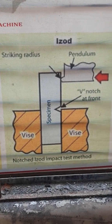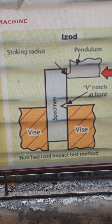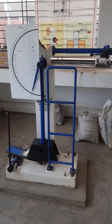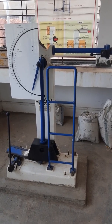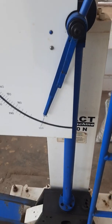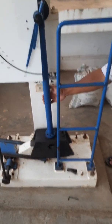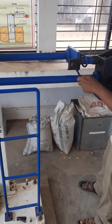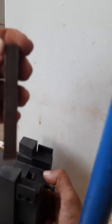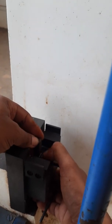This schematic diagram shows the specimen mounting for the ISO test. The specimen is mounted vertically with the V-notch facing towards the pendulum. This is the impact testing machine on which both ISO and Charpy tests are carried out. Set the pointer to the zero mark, then raise the pendulum to 90 degrees and latch it. The specimen is placed in the fixture with the notch facing the pendulum side.